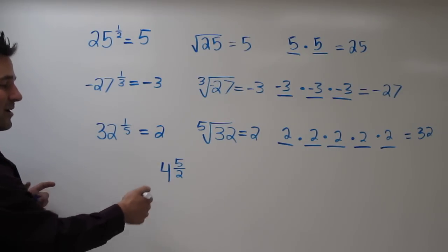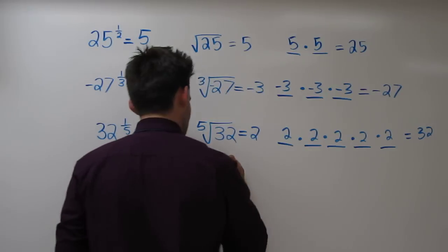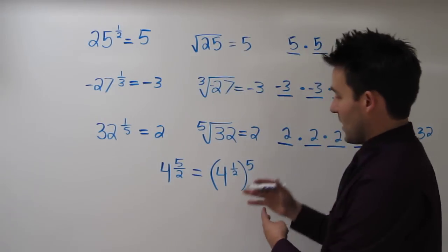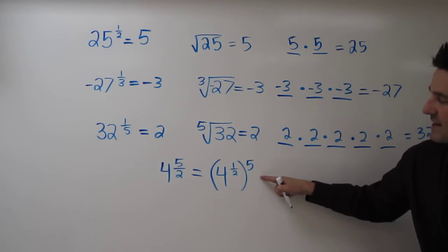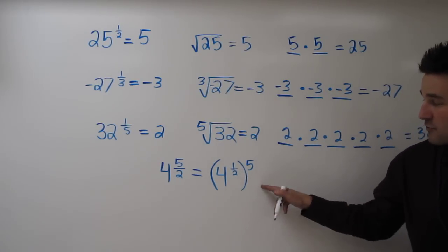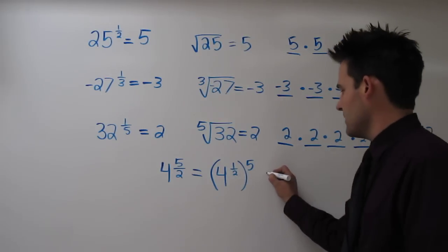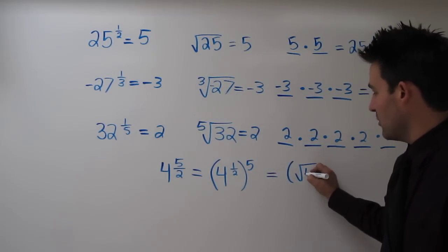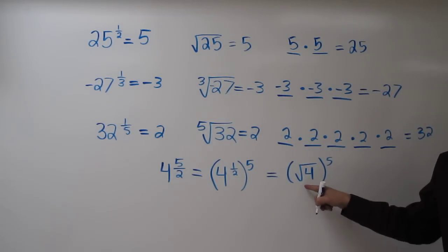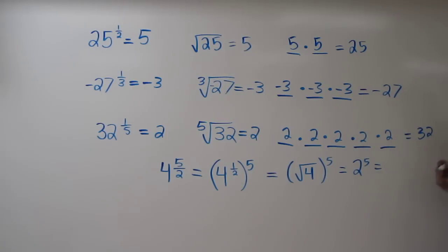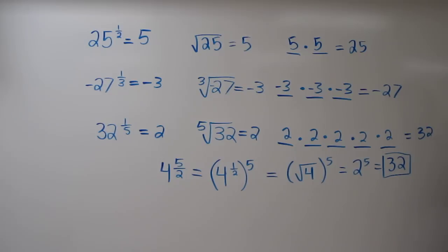Let's rewrite 4 to the 5 halves as 4 to the 1 half, raised to the 5th power. When we have it written in this form, we can see that 4 to the 1 half is the same as taking the square root of 4. So this is the same as the square root of 4 raised to the 5th. The square root of 4 is 2, so 2 raised to the 5th. And we already found out that 2 raised to the 5th is 32. So 4 to the 5 halves is 32.